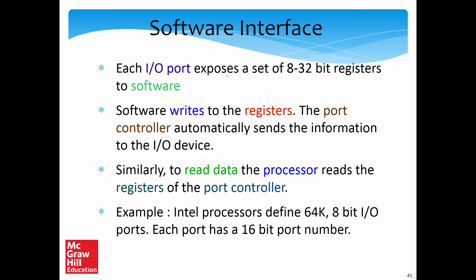Each IO port exposes a set of 8 to 32 bit registers to software. Software writes to these registers using assembly instructions. The port controller automatically sends information to the IO device — it catches the write, performs the right voltage conversions, and sends it to the actual device via the physical and data link layers. Similarly, to read data, the processor reads the registers of the port controller, which contain data received from the device. Intel processors define 64K — specifically 65,536, which is 2 to the power 16 — 8-bit IO ports, each with a 16-bit port number.